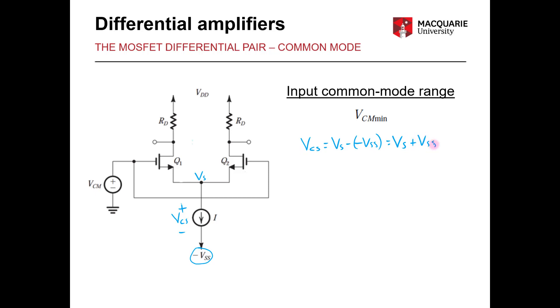Now we also know from quick analysis of our circuit here that VS is equal to our common mode voltage VCM minus VGS. That's the difference in voltage between the gate and the source here.